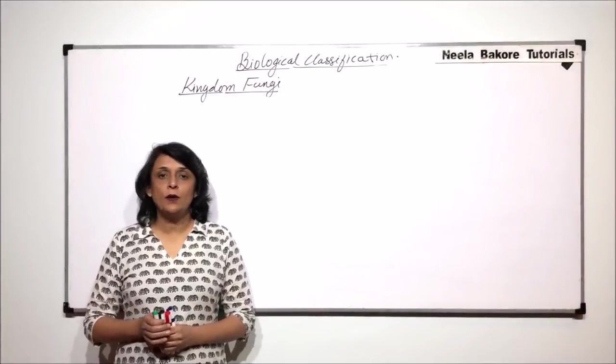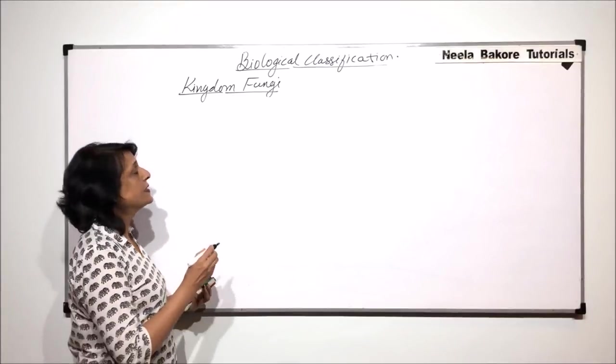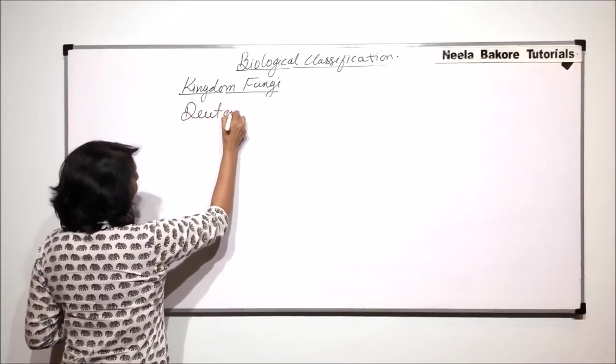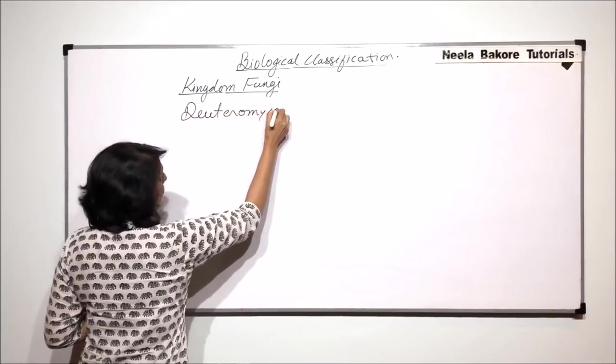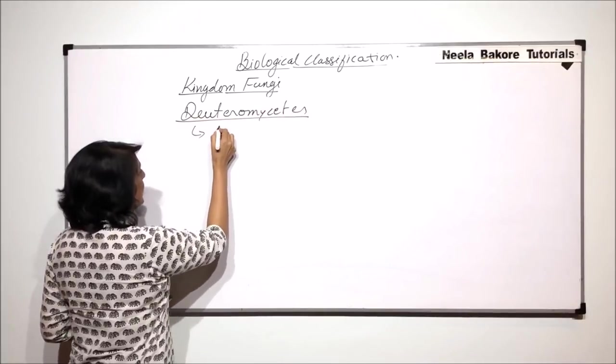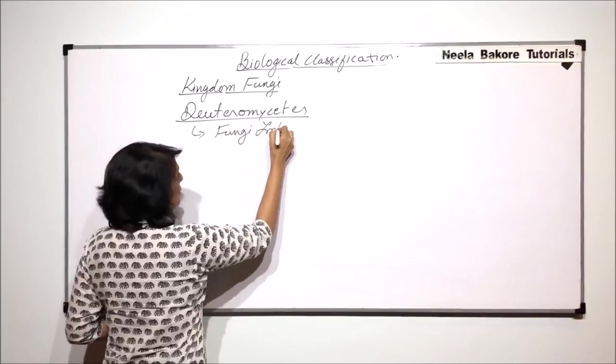In this part we will talk about the last group, Deuteromycetes, in this kingdom. The members of Deuteromycetes are called Fungi Imperfecti.